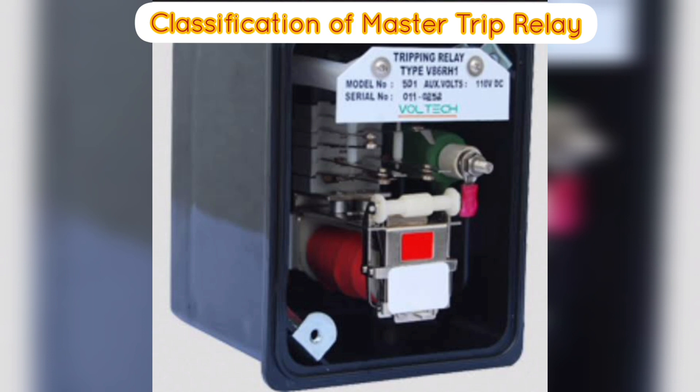Next we learn about the classification of Master Trip Relay. There are three categories of Master Trip Relays based on the fault detection level. Some faults need only annunciation and no tripping, whereas some faults need immediate electrical isolation. The three categories are: 1. Low Level Trip, ANSI Code 86L. 2. Medium Level Trip, ANSI Code 86M. 3. Heavy Level Trip, ANSI Code 86H.